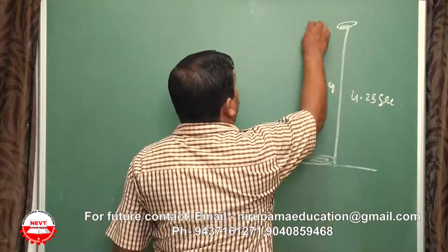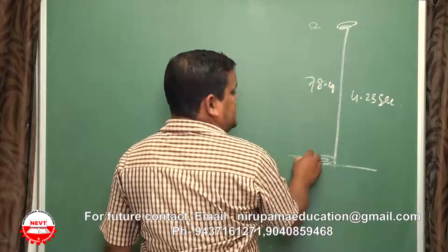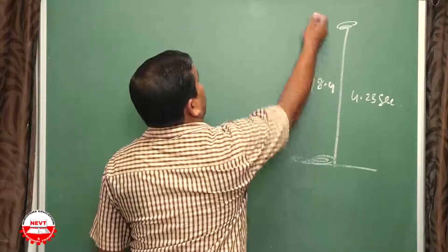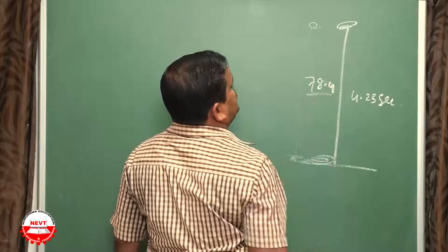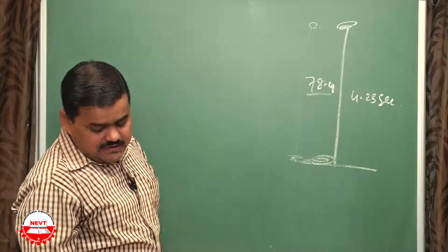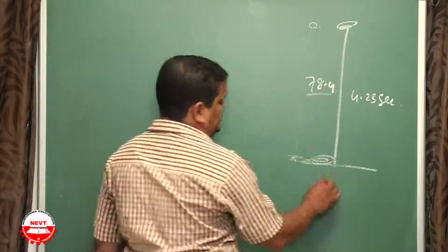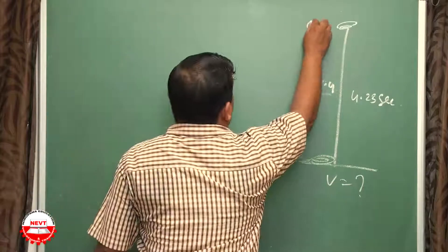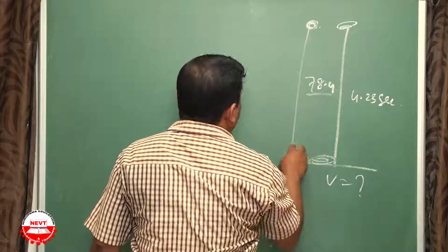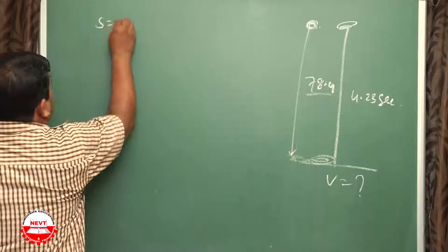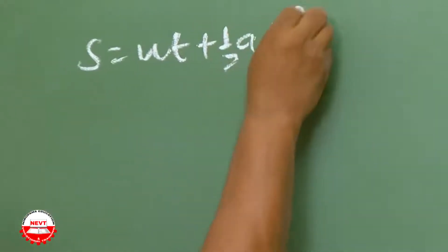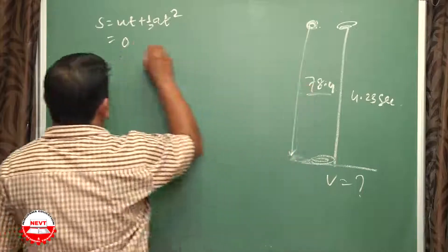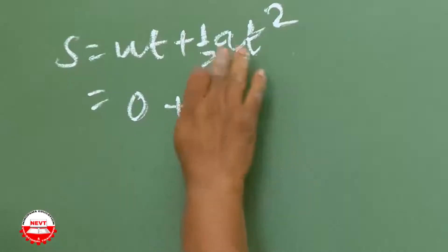When the helmet falls down, it will take some time to strike the ground. After that, the sound has to travel that distance. You have to find the velocity of sound. First find the time taken by the helmet to strike the ground. Using s = ut + ½at², where u is initially 0 because it is ready to fall, so s = ½ × g × t².